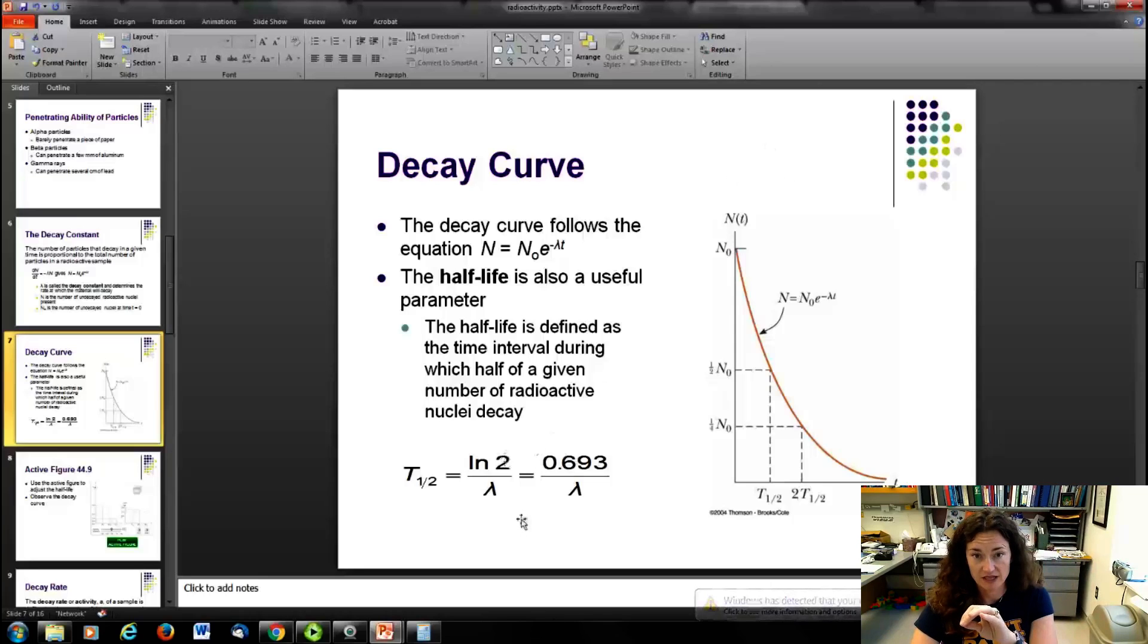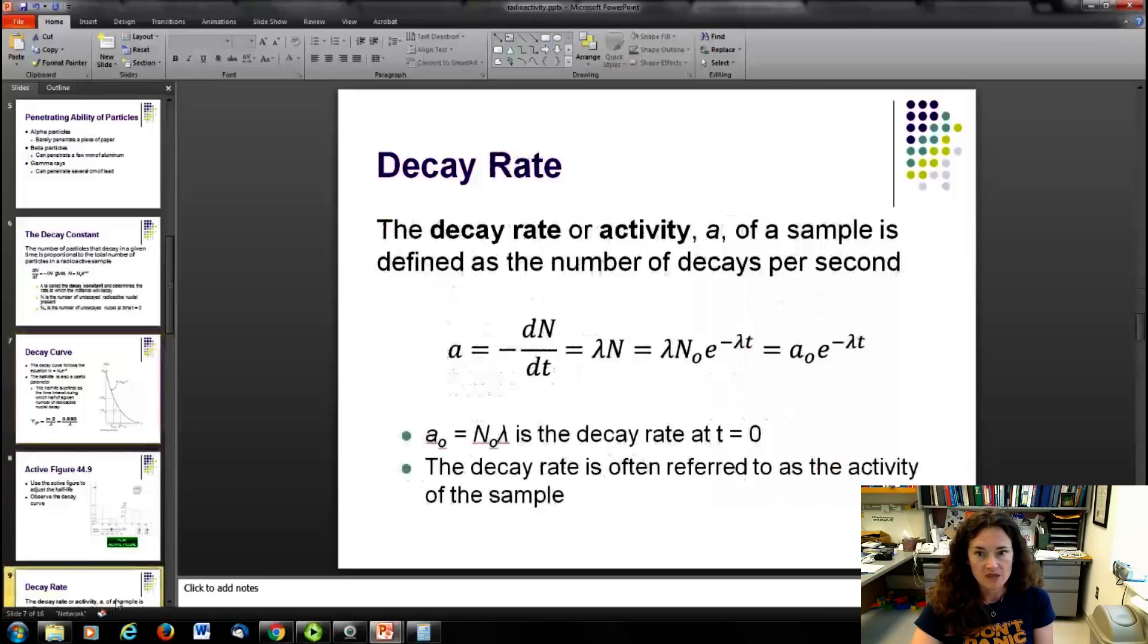And since it's an exponential decay like this, it follows the exponential decay curve like that. The half-life can be written in terms of the decay constant lambda as the half-life equals the natural log of 2 divided by lambda. And you would just set that N over N0 equals one-half equals e minus lambda t, and you take the natural log of both sides and solve. So I encourage you to do that little proof for yourself. Prove that the half-life equals the natural log of 2 divided by lambda. And the natural log of 2 is just 0.693. So the half-life equals 0.693 divided by lambda.